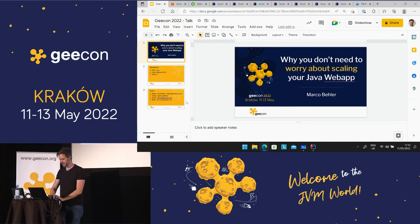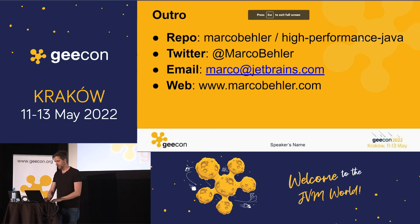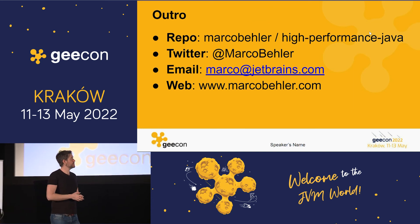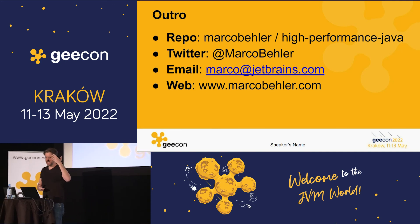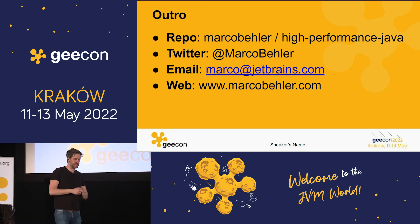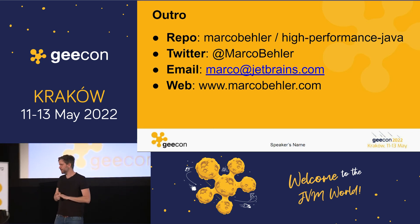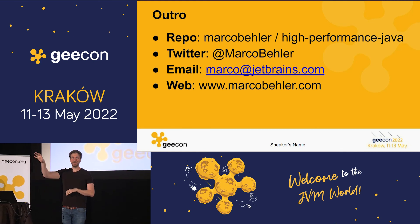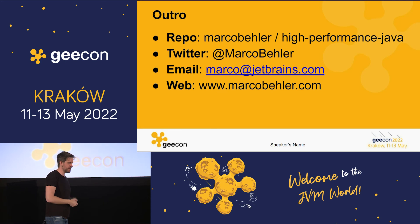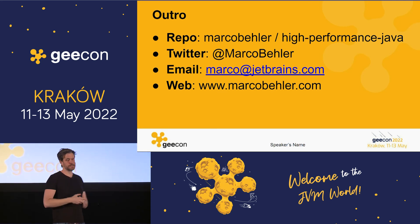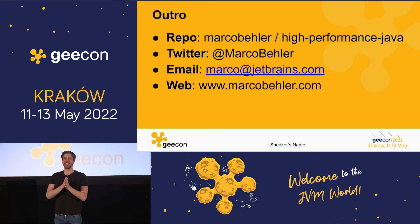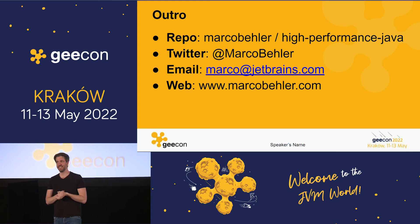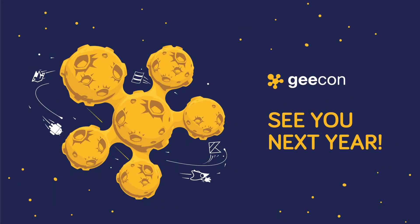Last but not least, the outro: the repository is on GitHub at marco-bela/high-performance-java. It's slightly misnamed, but that's where you'll find the code you saw me execute. You'll just need a couple of servers in AWS, and I can run you through it afterward. You can also reach me on Twitter at marco-bela, my website marco-bela, or by email at marco@jetbrains.com. Thank you for listening — I hope you learned something!